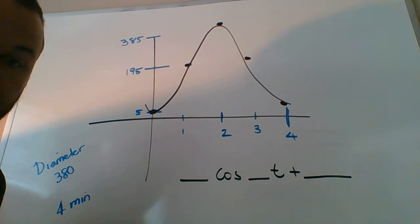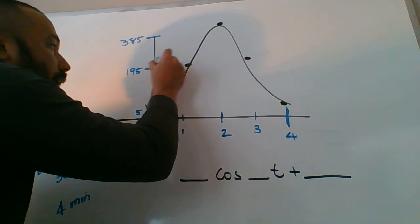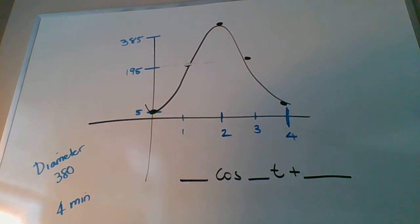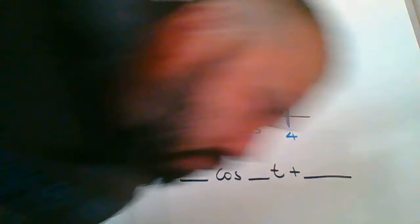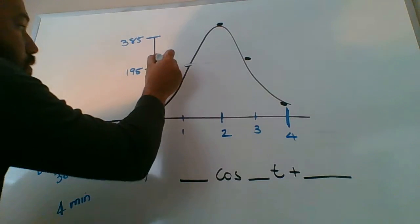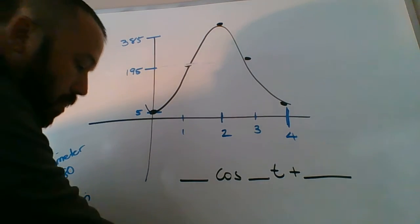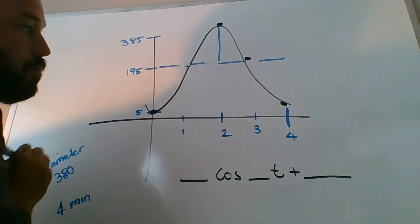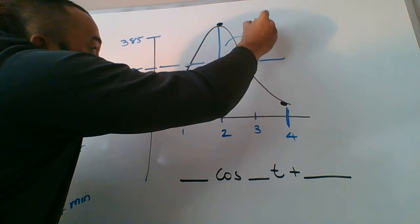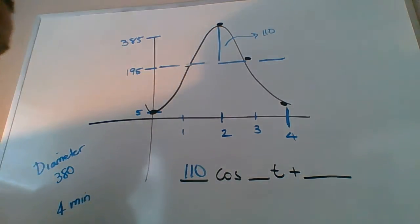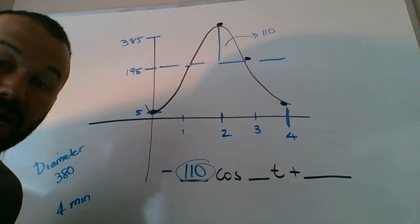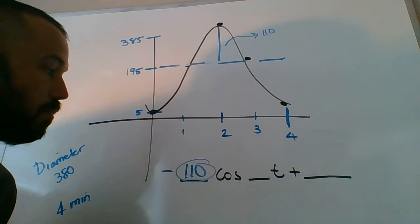The first part out front is the amplitude, and that's the distance from the center to the top. From the middle to the top, that's the amplitude, or from the middle to the bottom. So this would be the radius - this would be 110. So out front goes 110, this is the amplitude right here. Because this thing starts at the bottom instead of the top, it's going to be negative. So it's negative 110 cosine.